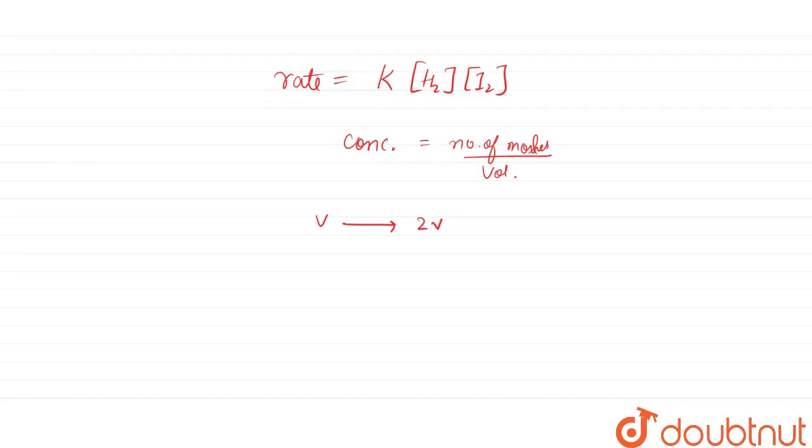But when volume becomes 2V, that means concentration will become half. Concentration will become half because, as you can see, concentration equals number of moles upon volume. So if the volume is doubled, then the concentration value will become half. That is, C equals N by 2V. So concentration will become half here.